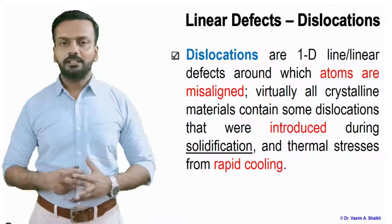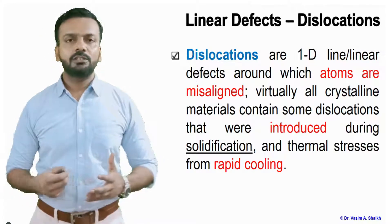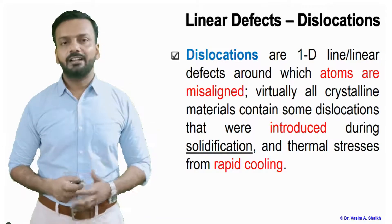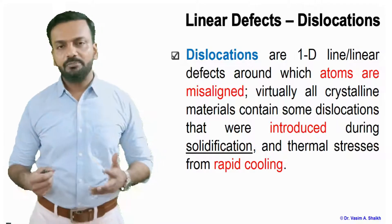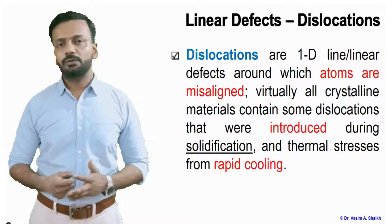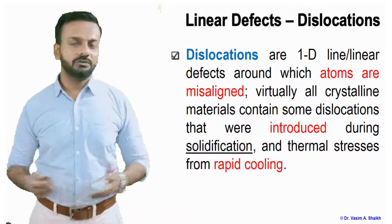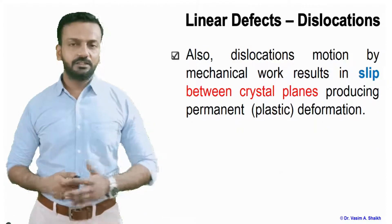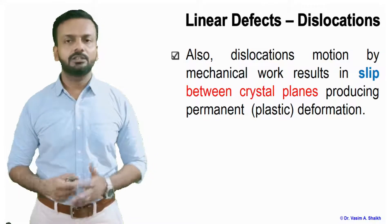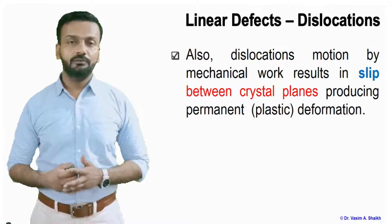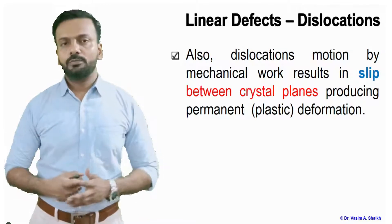Edge dislocation, screw dislocation, and mixed dislocation — they can't be avoided. When the material is solidifying, all these types of dislocations and point defects will be there inherently in the material. Dislocations are one-dimensional linear defects around which atoms are misaligned in the planes, and virtually all crystalline materials contain some dislocations introduced during solidification and from thermal stresses from rapid cooling. Dislocation motion is associated with mechanical deformation or plastic deformation of the material.